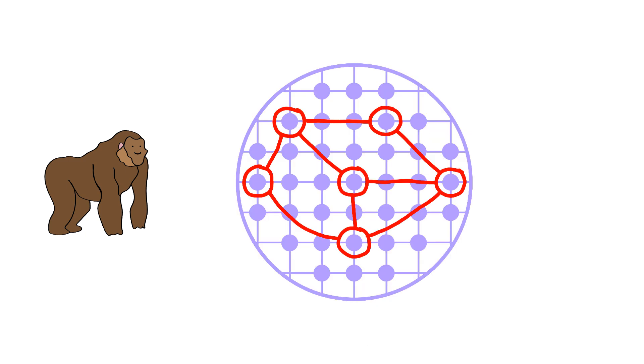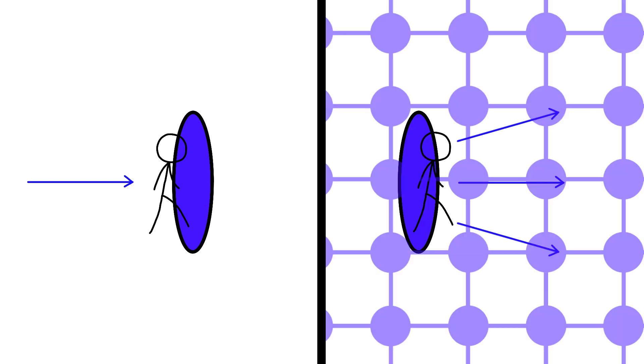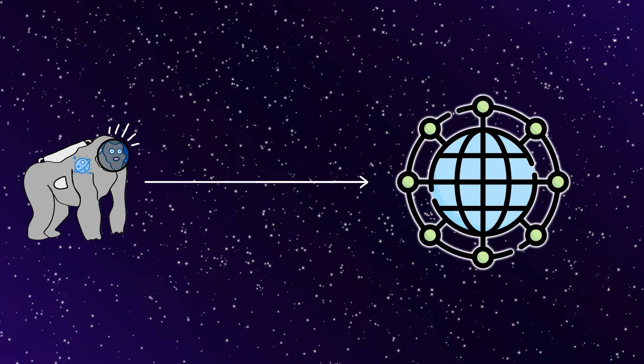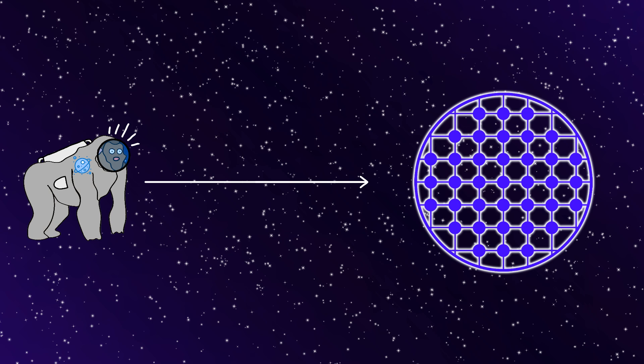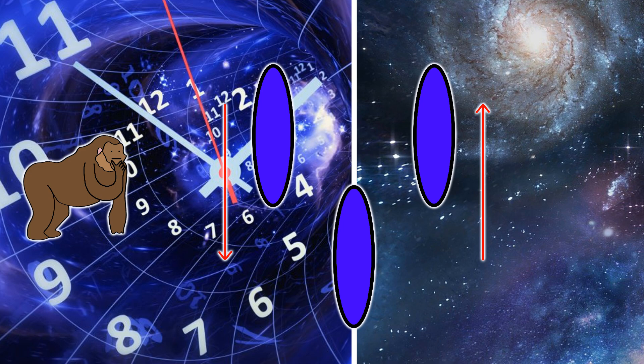And Monkey starts building portals that connect different parts of the sphere instantly so you can step through a door and emerge anywhere on the inner surface. And Monkey realizes Monkey has created a transportation network that makes the entire sphere feel like one interconnected world. But Monkey's also thinking, what if these portals destabilize space-time itself?